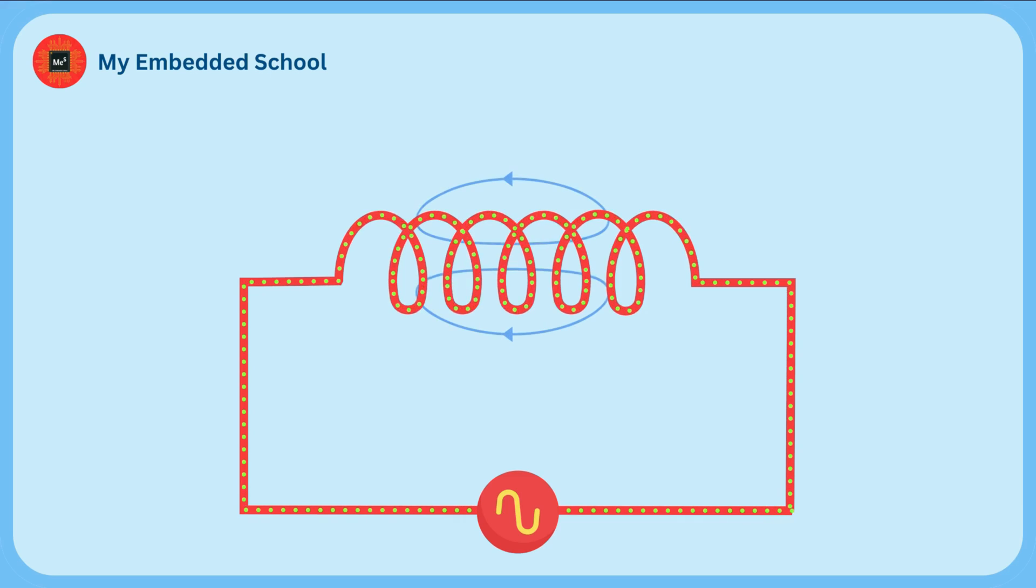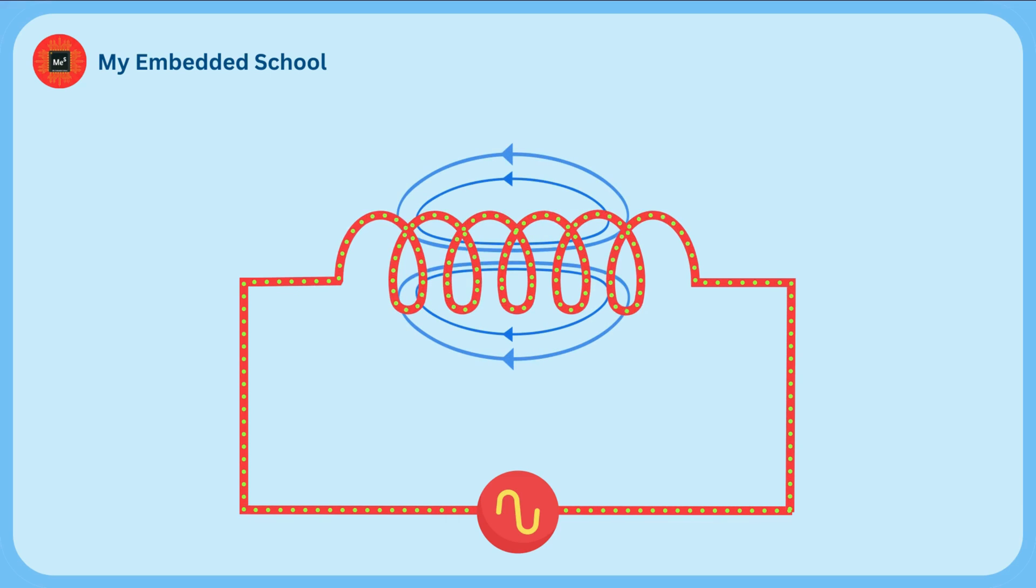When current starts flowing through an inductor or coil, a magnetic field starts to expand. When the current reaches its peak value, the magnetic field stops expanding, and an inductor gets some energy in the form of a magnetic field.